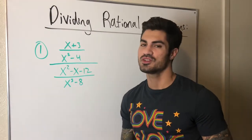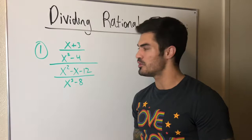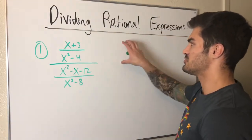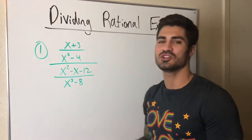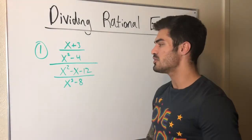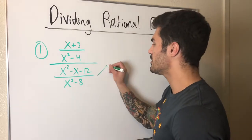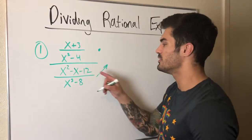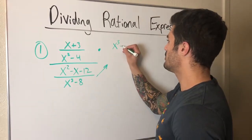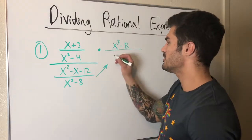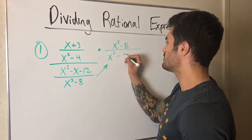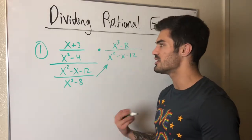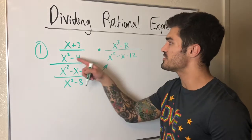This second example is written as a fraction over a fraction, but it's really the same thing — we can rewrite it with a division symbol. What we do is grab the denominator, move it up, and write the division symbol. I'm going to flip it and write the multiplication: x cubed minus 8 is now on top in the numerator, and the denominator has x squared minus x minus 12. Now I can start the factoring process.